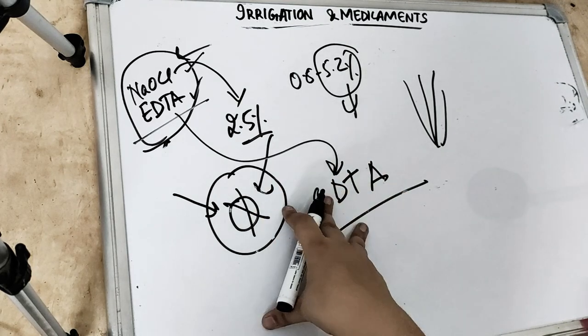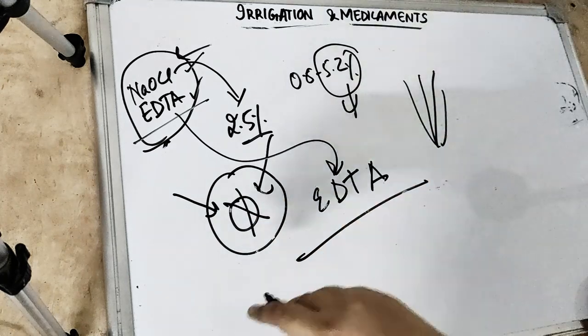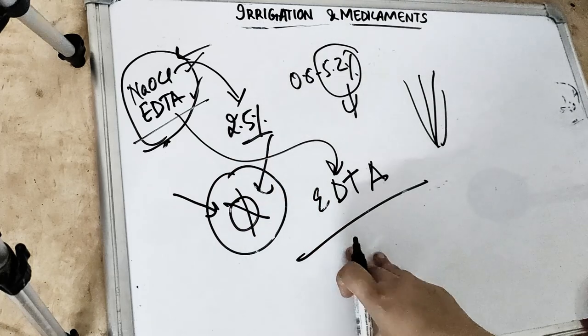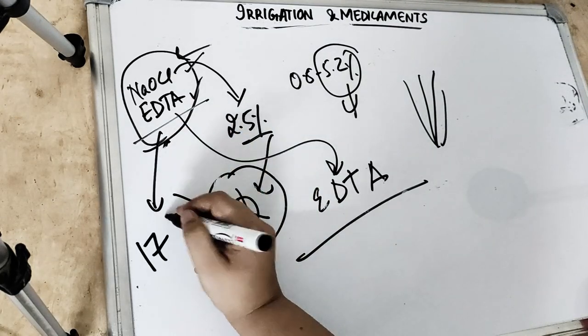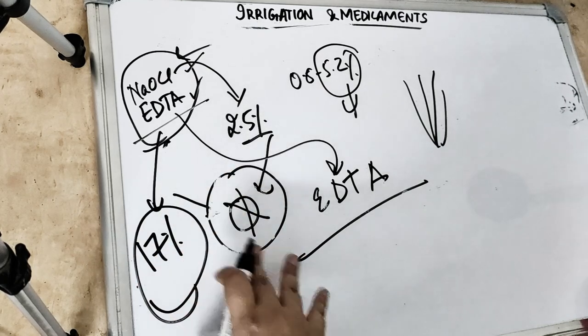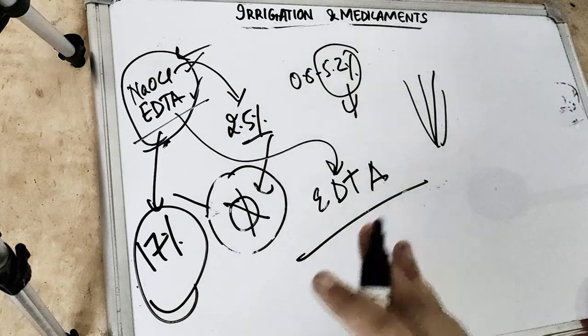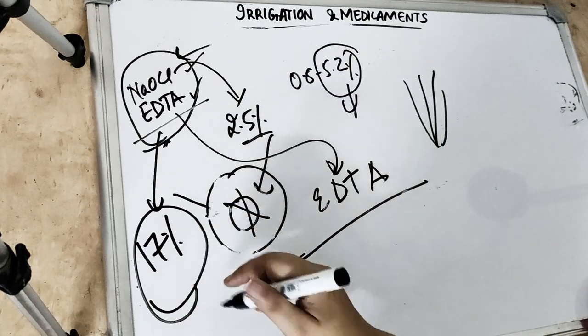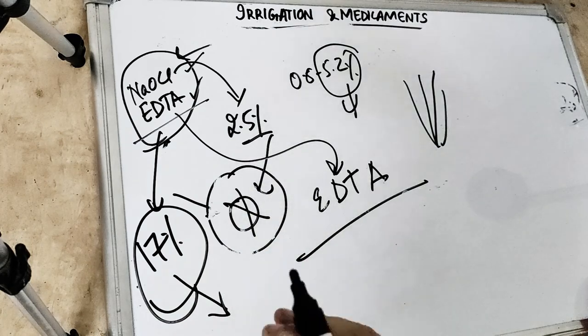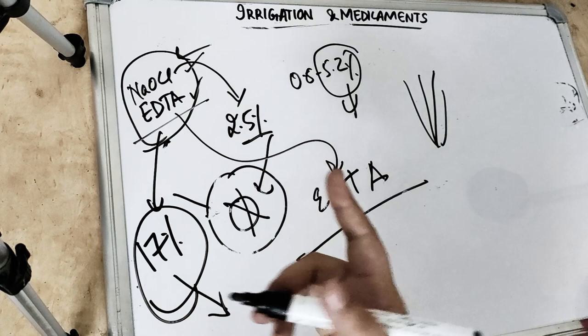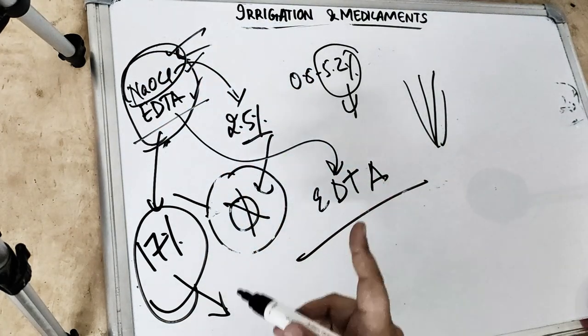How do we use it? Either we use it on the file or we can put 2 to 3 drops from the syringe and wait for a minute time. How much percentage do we use this EDTA? Always remember 17% of EDTA we use. If we are using any modification of EDTA, then also we use 17%. So 17% of EDTA for 1 minute and we rinse it, followed by rinsing with sodium hypochlorite.